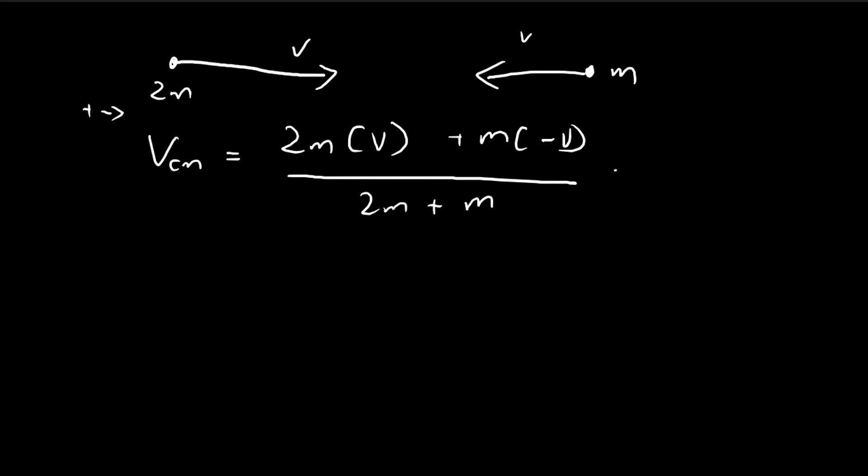And then the numerator is just mv, denominator is 3m, so we get v over 3. So the center of mass is moving at a velocity of 1 over 3v.